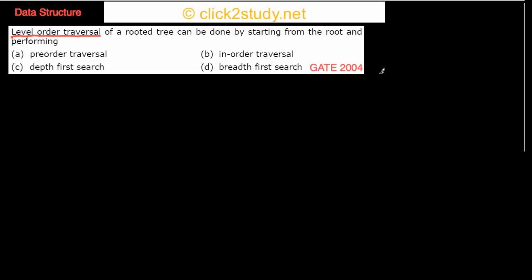The next question is: level order traversal of a rooted tree can be done by starting from the root and performing — and then the options are pre-order traversal, in-order traversal, depth first search, or breadth first search.